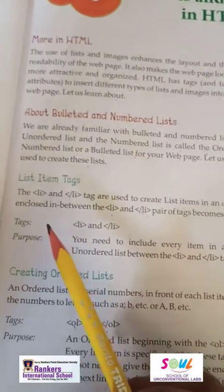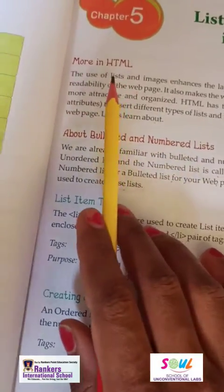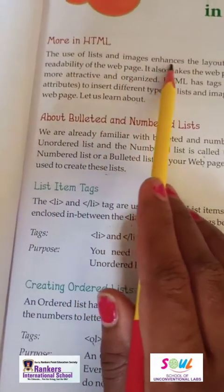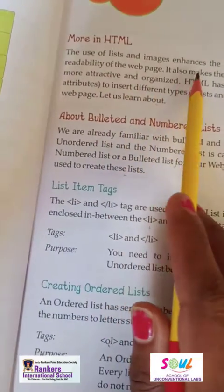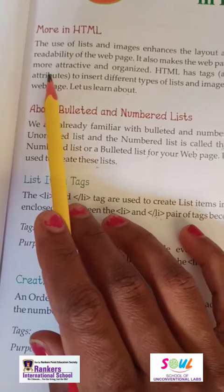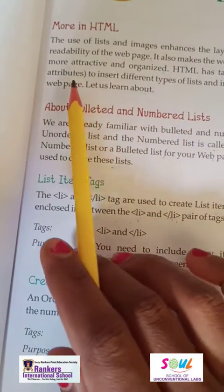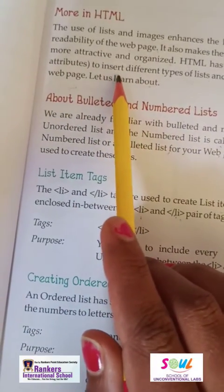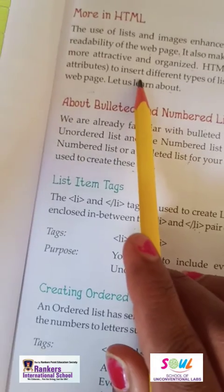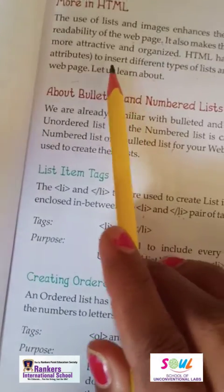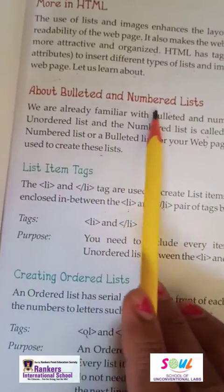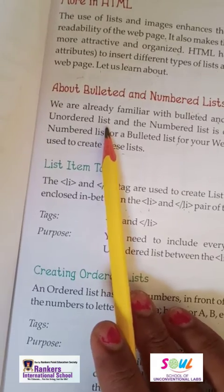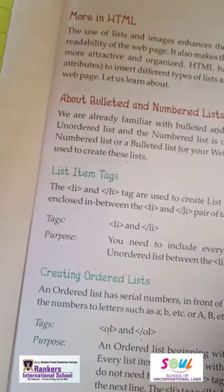In HTML, the use of lists and images enhances the layout and readability of web pages. It also makes the web page look more attractive and organized. HTML has tags to insert different types of lists and images into a web page. Now, about bulleted and numbered lists — we are already familiar with them. The bulleted list is called the unordered list, and the numbered list is called the ordered list.